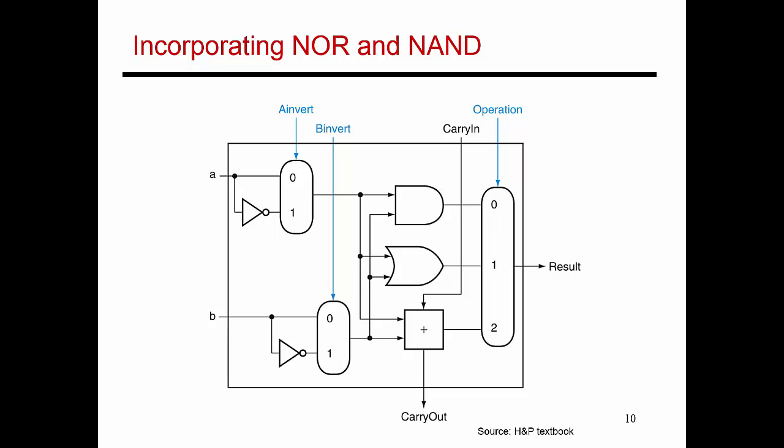So we've designed this basic 32-bit ALU that's capable of six functions so far: OR, AND, NOR, NAND, addition, and subtraction. Now let's add a couple more to it.